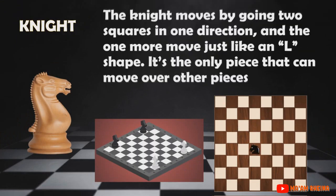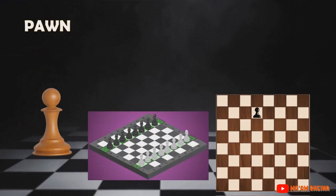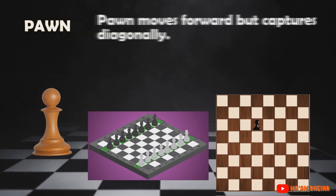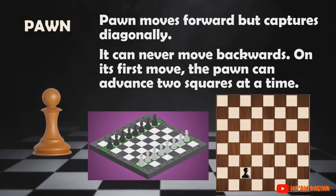The knight moves by going two squares in one direction and then one more move, just like an L. It is the only piece that can move over other pieces, and it can capture a piece only when landing on that piece's square. The pawn moves forward but captures diagonally, and it can never move backwards. On its first move, the pawn can advance two squares at a time.